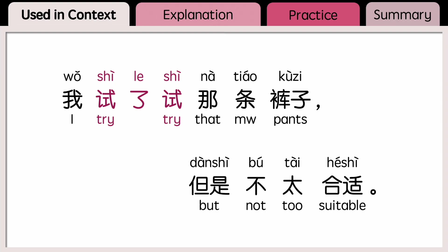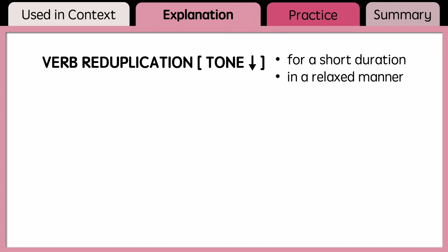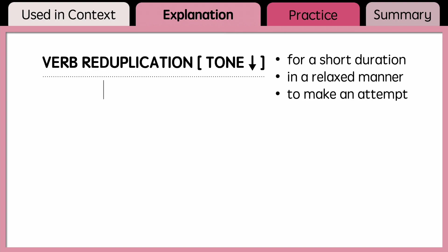我试了试那条裤子,但是不太合适. Unlike the reduplication of adjectives, which intensifies the tone, the verb reduplication weakens it down. It expresses that the action is done for a short duration, in a relaxed manner, or to make an attempt. It has the effect of softening the tone.